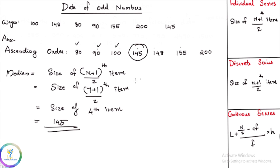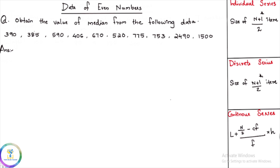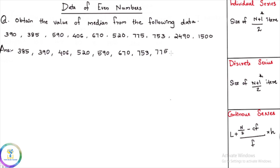Now if you have data with an even number of items, that will be the median calculation. Here we have 10 items: 1, 2, 3, 4, 5, 6, 7, 8, 9, 10. We apply the same formula. We arrange in ascending order: 385, 390, 406, 520, 590, 670, 753, 775, 1500, 2490. We start the ascending order.